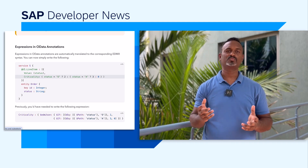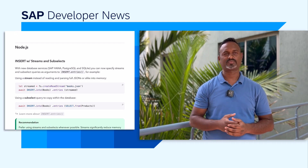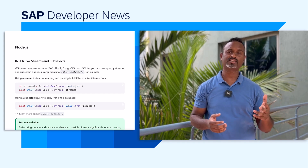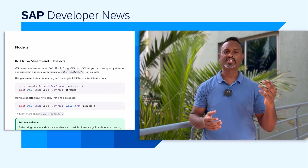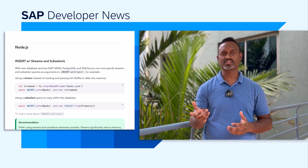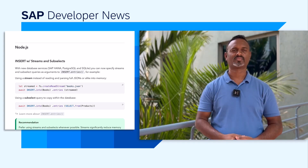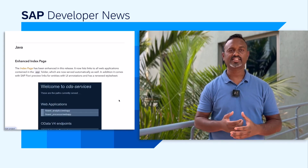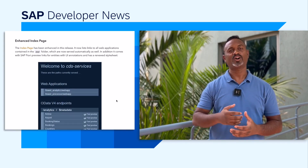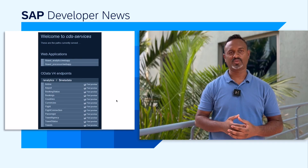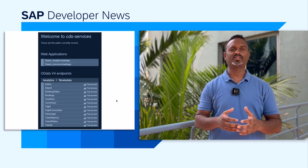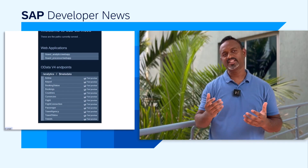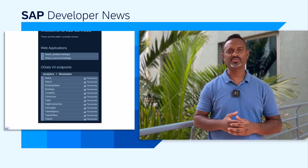Coming to Node.js updates: with the new database services, you can now specify streams and sub-select queries as arguments to insert. With updates for Java, we have an enhanced index page listing all web applications in the app folder. It also provides SAP Fiori preview links for entities with UI annotations.